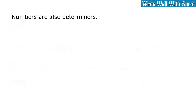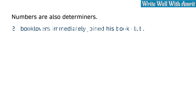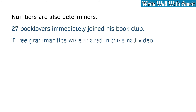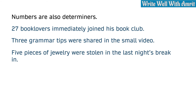Numbers are also determiners because they determine the quantity. For example: 'Twenty-seven book lovers immediately joined his book club.' 'Three grammar tips were shared in the small video.' 'Five pieces of jewelry were stolen in last night's break-in.'